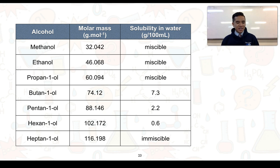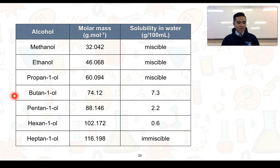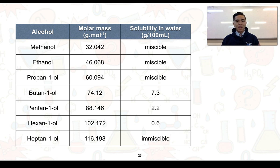Solubility generally decreases from top to bottom. Methanol, ethanol, and propan-1-ol are completely miscible in water — we can add essentially any mass or volume of these alcohols to water and it will form a single miscible layer. As we go down, solubility starts to decrease. Butan-1-ol is at 7.3 grams per 100 mL water, and after that point it starts to form two immiscible layers.